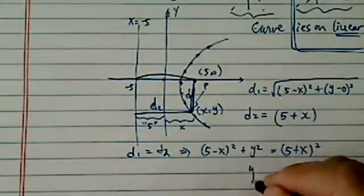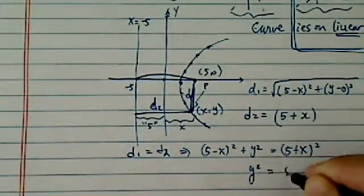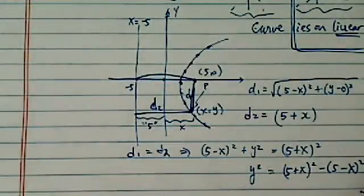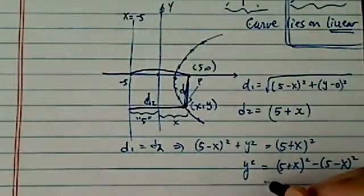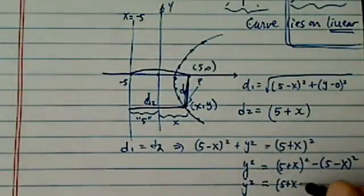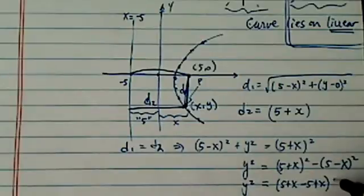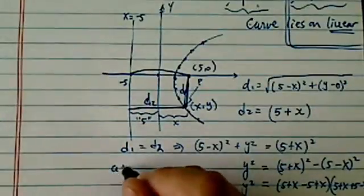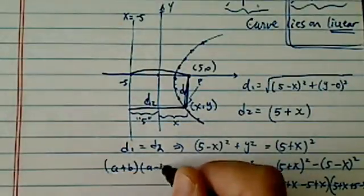Then from here we say y² is equal to (5+x)² minus (5-x)². Difference of squares here, so we have (5+x) minus (5-x), that's the first term, and then we'll have (5+x) plus (5-x). So all I did is this: (a+b) times (a-b), that's equal to a² minus b².